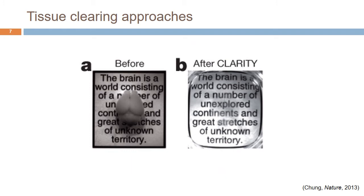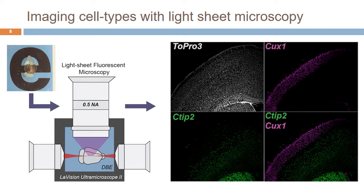You can then send light through the cleared sample and image where the proteins are, which is what you're usually interested in. Here's an example — before tissue clearing you obviously can't see through the brain, and after tissue clearing you can. There's a famous quote from Ramón y Cajal: 'The brain is a world consisting of a number of unexplored continents and great stretches of unknown territory.' We didn't invent these techniques but we're implementing them to study how genetic variation impacts brain development and structure.